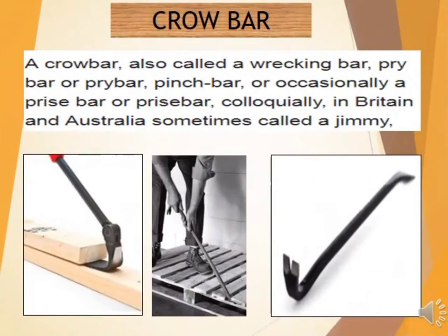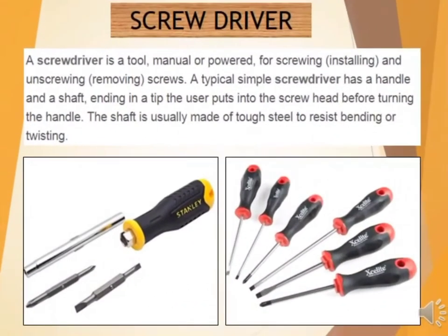Next, we have Crow Bar — a crow bar is also called a wrecking bar, or occasionally a pry bar. In Britain and Australia, sometimes called a jimmy. Then, we have Screwdriver — a screwdriver is a tool for screwing and unscrewing screws. A screwdriver has a handle and shaft ending in a tip that the user puts into the screw head before turning the handle. The shaft is usually made of tough steel to resist bending or twisting.